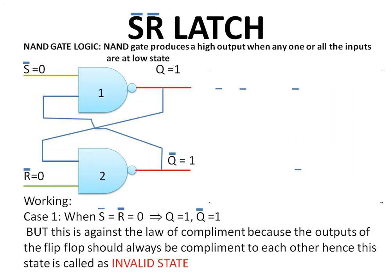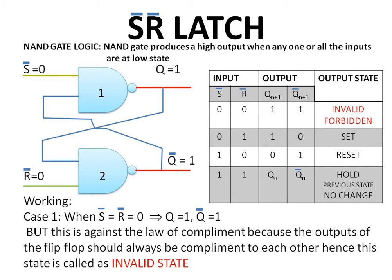Case one: when S̄ is equal to zero and R̄ is equal to zero. We can explain the working of the latch by using the logic of the gate used. NAND gate logic states that a NAND gate produces a high output when any one or all the inputs are at low state. When both inputs are at low state, one input to both gates is at low state, hence both gates produce a high output. But Q and Q̄ cannot have the same value as they should be complementary to each other.